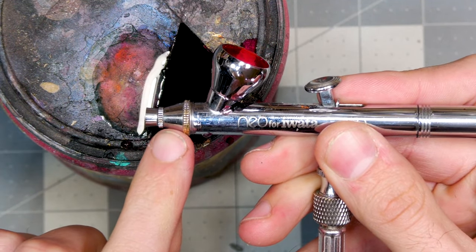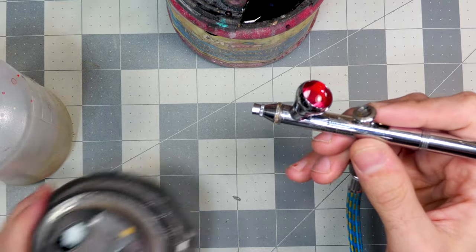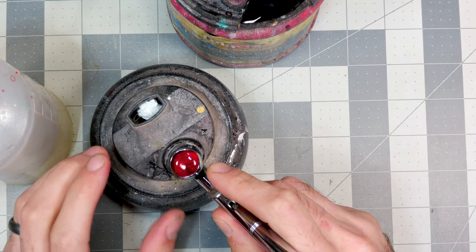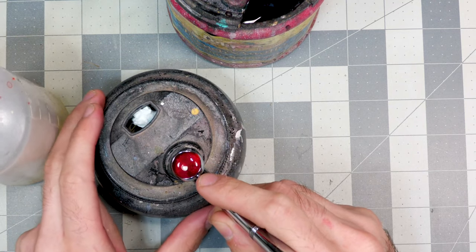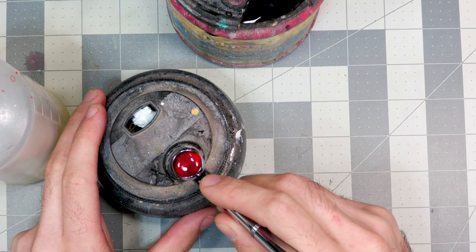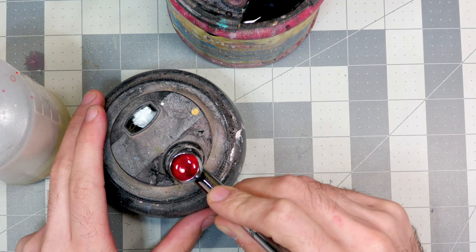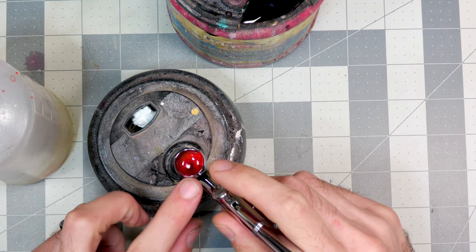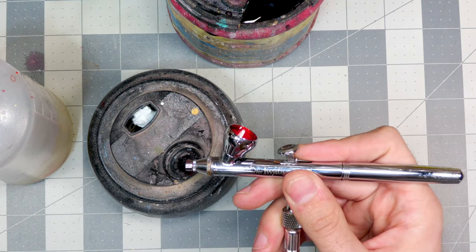Now there's still going to be paint trapped up in this front part right here. And I get one of these guys. You don't have to use this. It just helps to be able to spray and not have the paint splattering back or your old water splattering back. So I'll just run the water through here. And that's going to help get all that red paint out of the front of the airbrush right here.